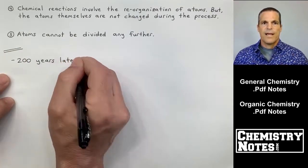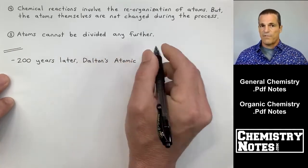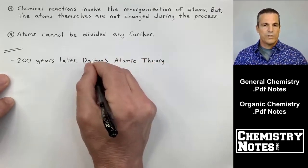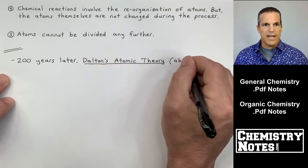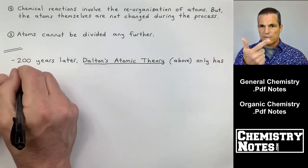Number five, atoms cannot be divided any further. Well, while we have number five in front of us, we do know that this one is not correct. Atoms can be divided further, right? Protons, neutrons, electrons.